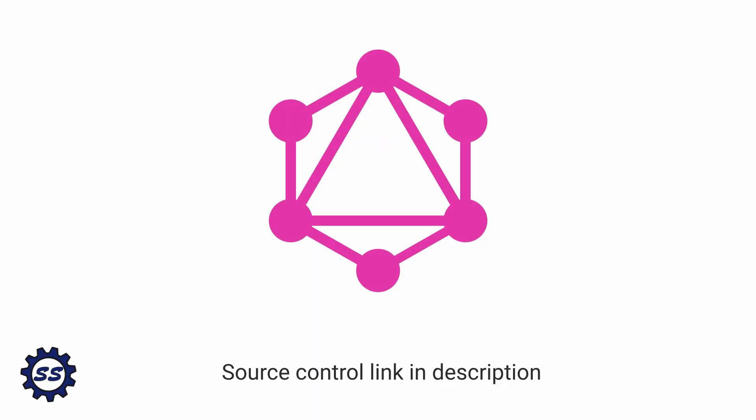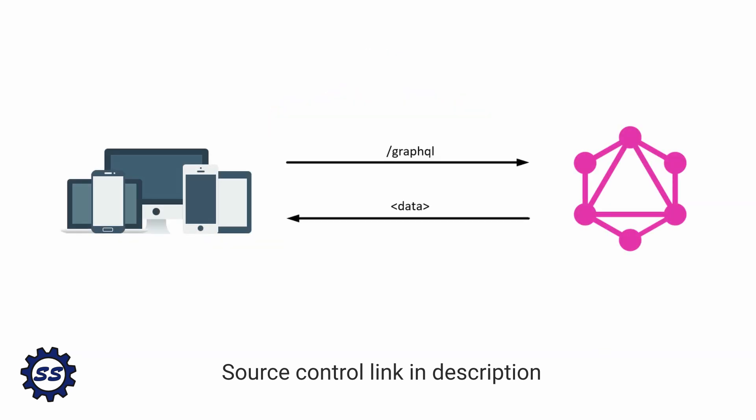GraphQL is a query language for APIs that simplifies client development. GraphQL servers are served from a single endpoint, so the client application only needs to know about that single endpoint in order to make all of its requests.